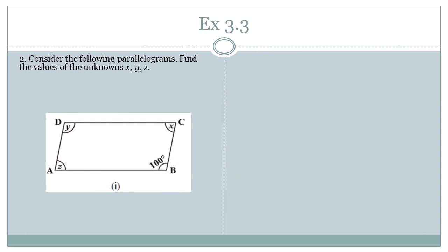Question number two: Consider the following parallelogram and find the values of unknowns X, Y, and Z. In a parallelogram, opposite angles are equal, adjacent angles sum to 180 degrees, and opposite sides are parallel. When we have a pair of parallel lines, there are three types of angle pairs: alternate angles, corresponding angles, and co-interior angles.